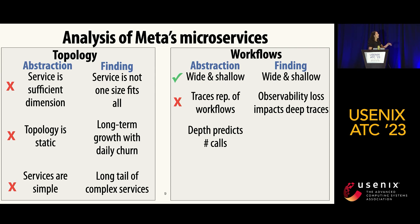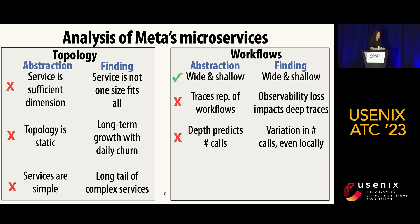We looked at the finding that call depth predicts characteristics of request workflows like number of calls, shown in previous work, and found that's not true at Meta — call depth is not a reliable metric in Meta's traces. And even when we scope locally within traces, we found there's a lot of variation in behavior, like number of calls.